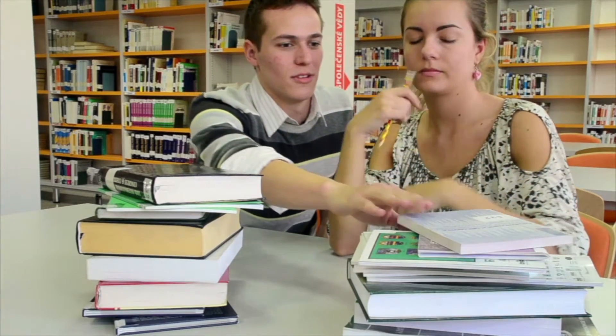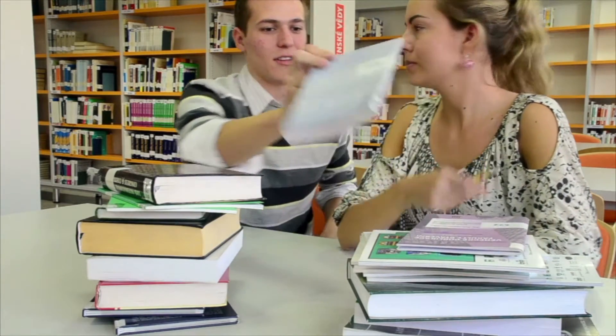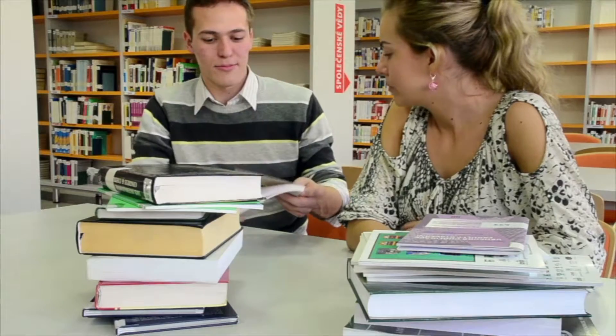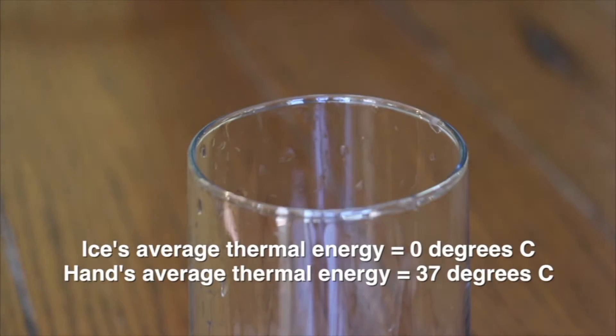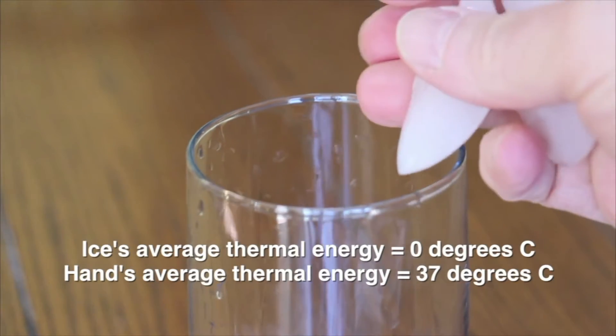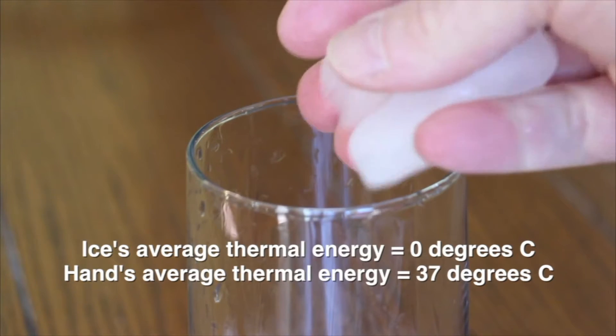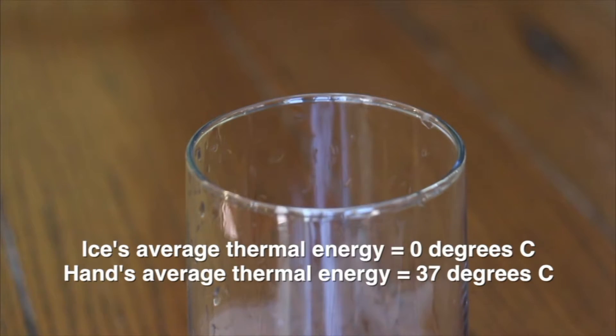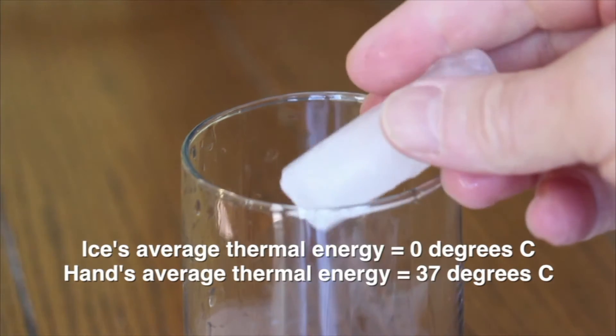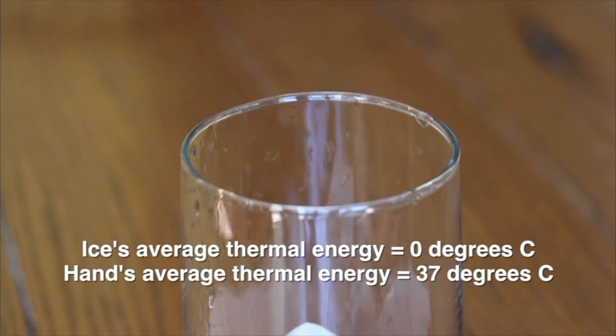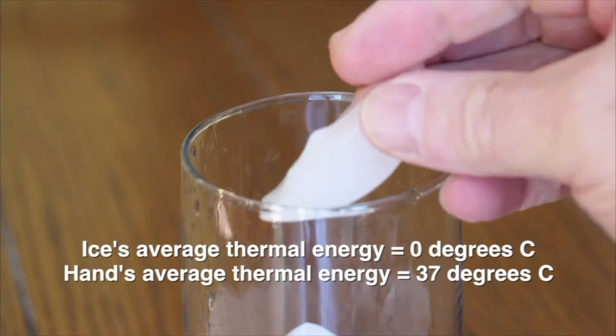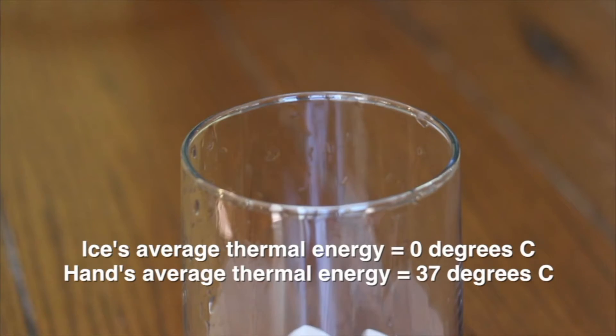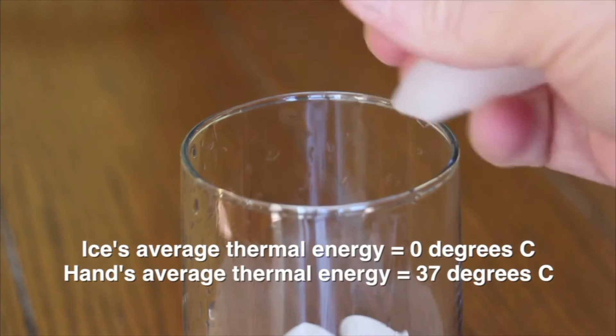One joule is about the same amount of energy it takes to lift a 3.5-ounce book 3 feet. The ice's average thermal energy is less than the average thermal energy in your hand. That is, the ice's temperature is lower than the temperature of your hand. Some thermal energy transfers as heat from your hand to the ice. Your nerves detect this loss of thermal energy, sending a message to your brain that you interpret as cold.